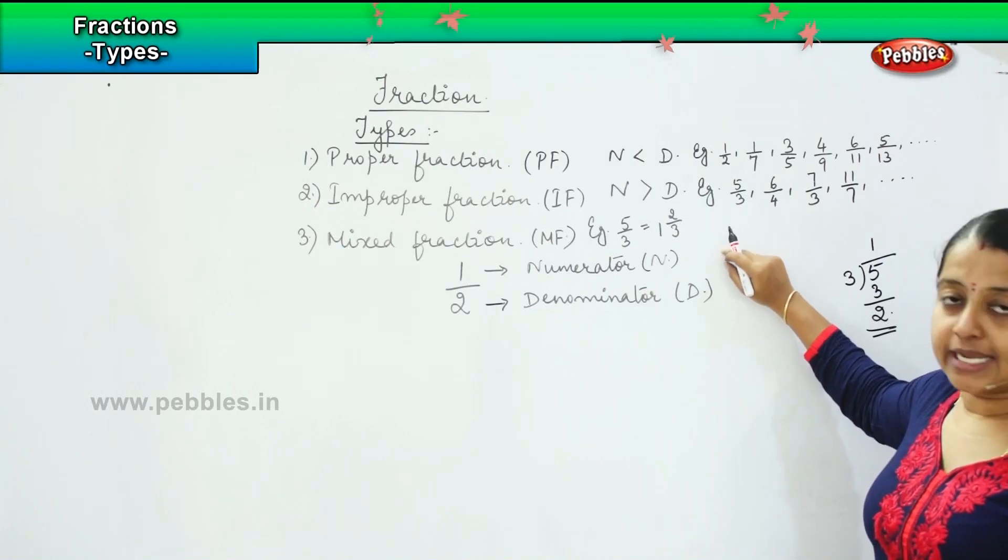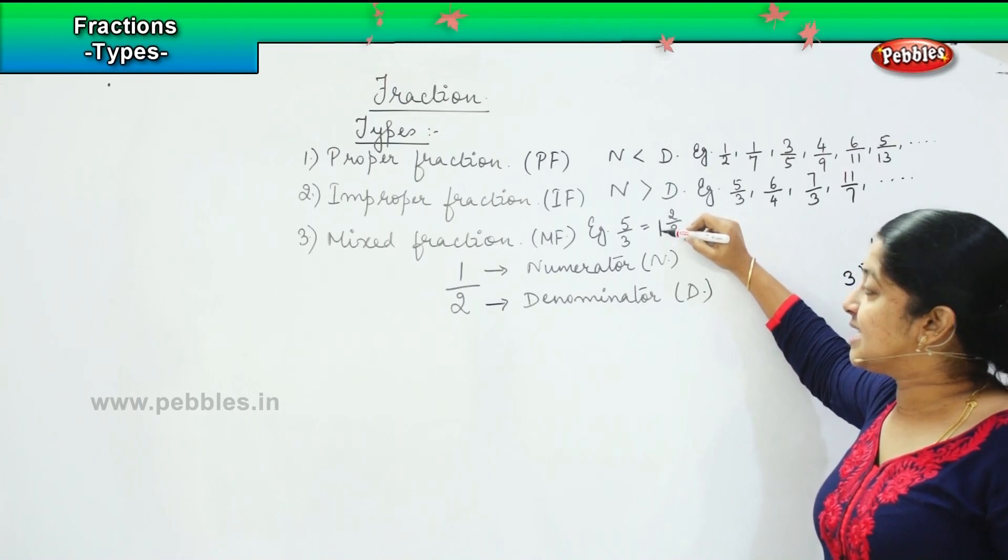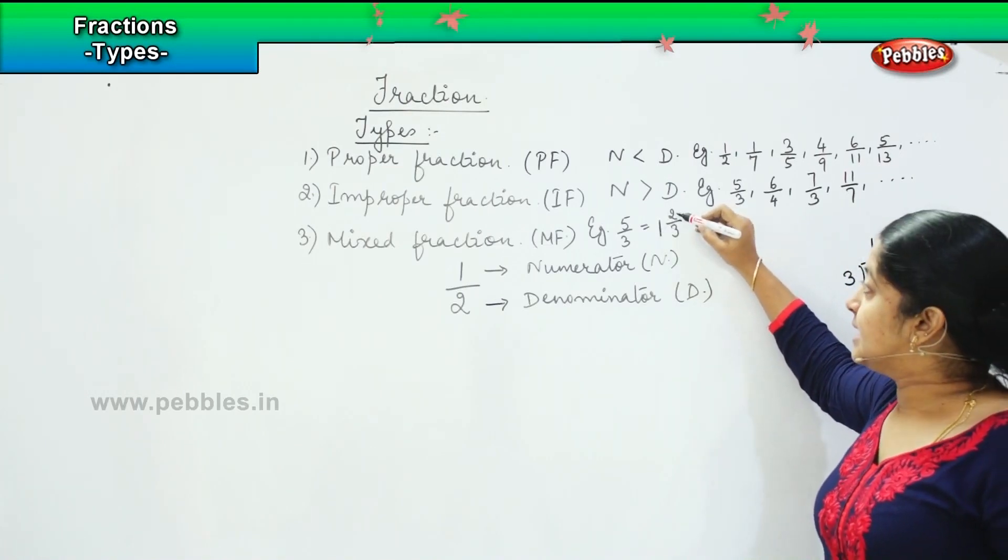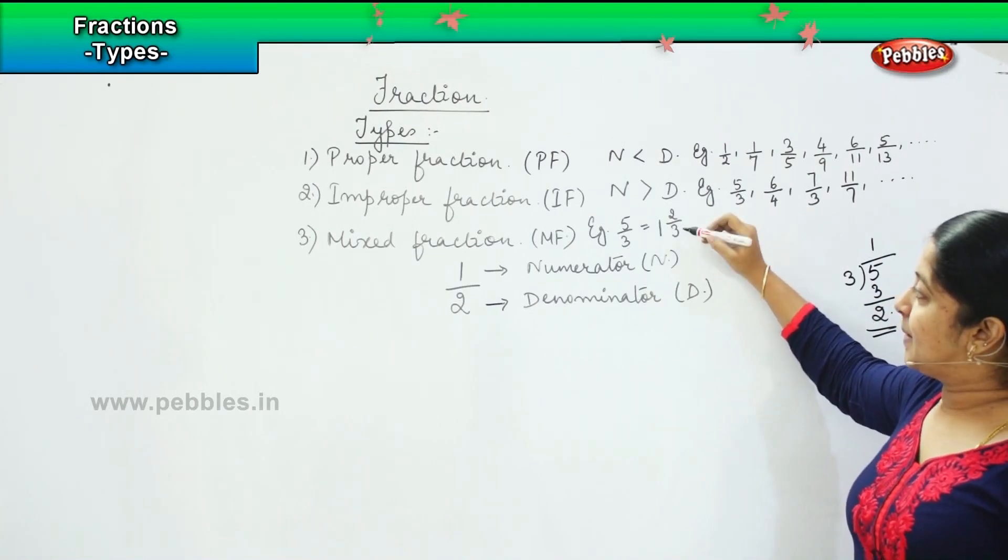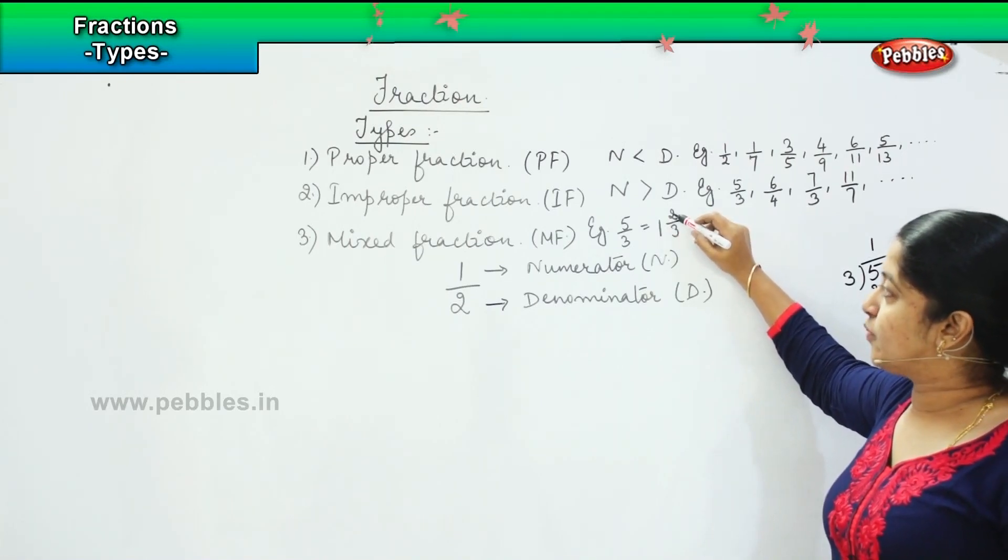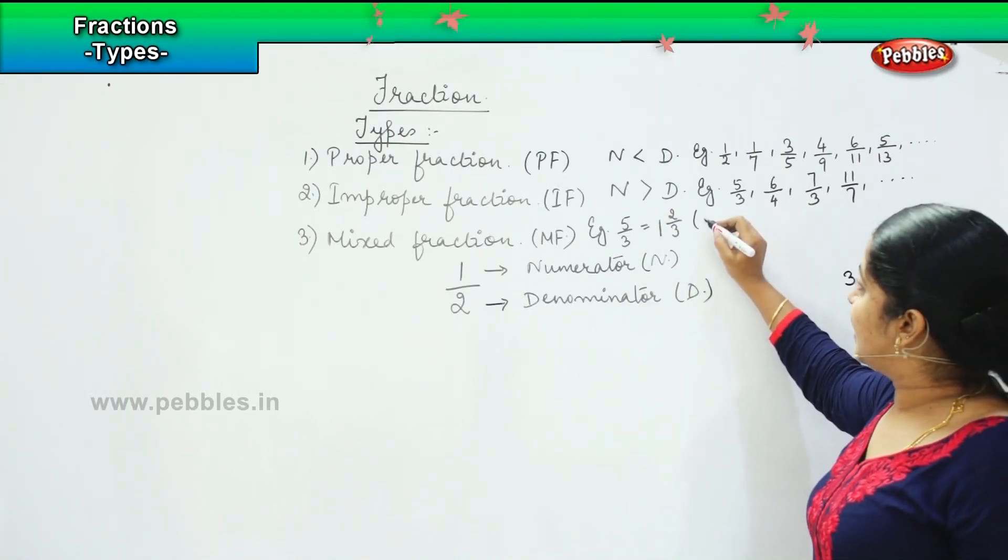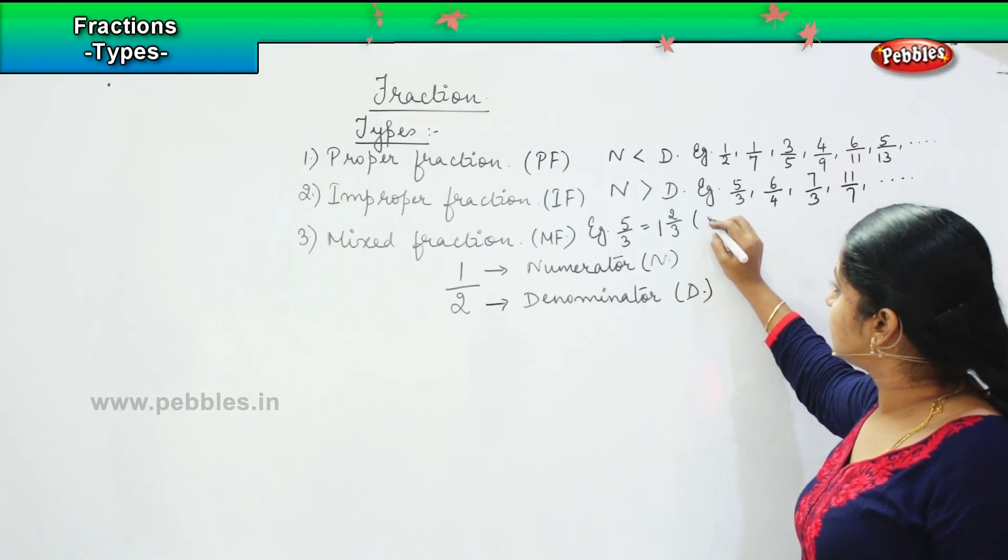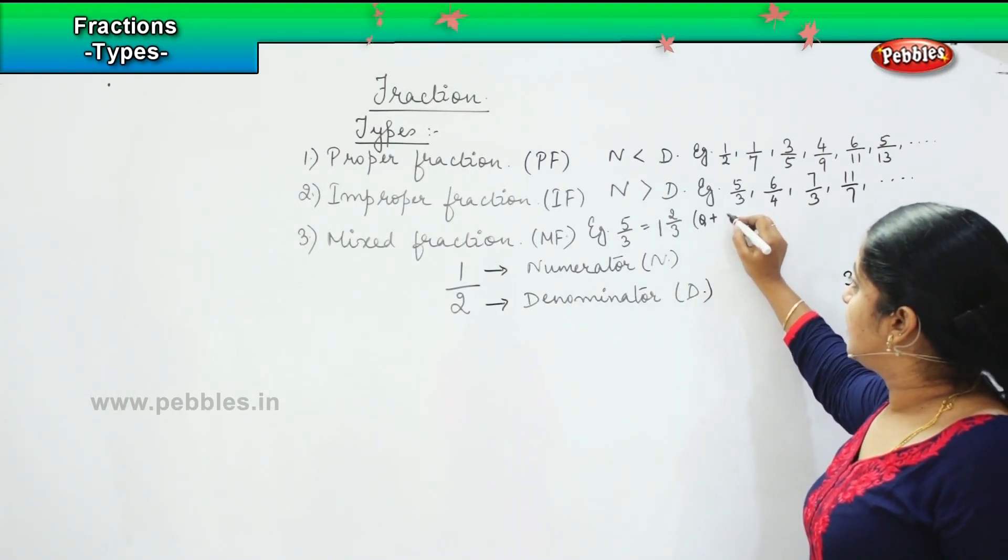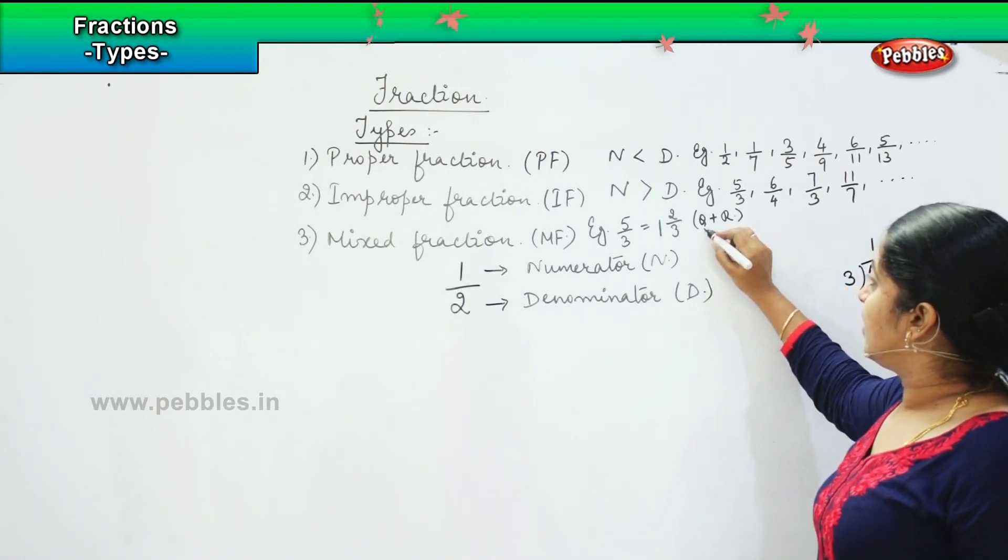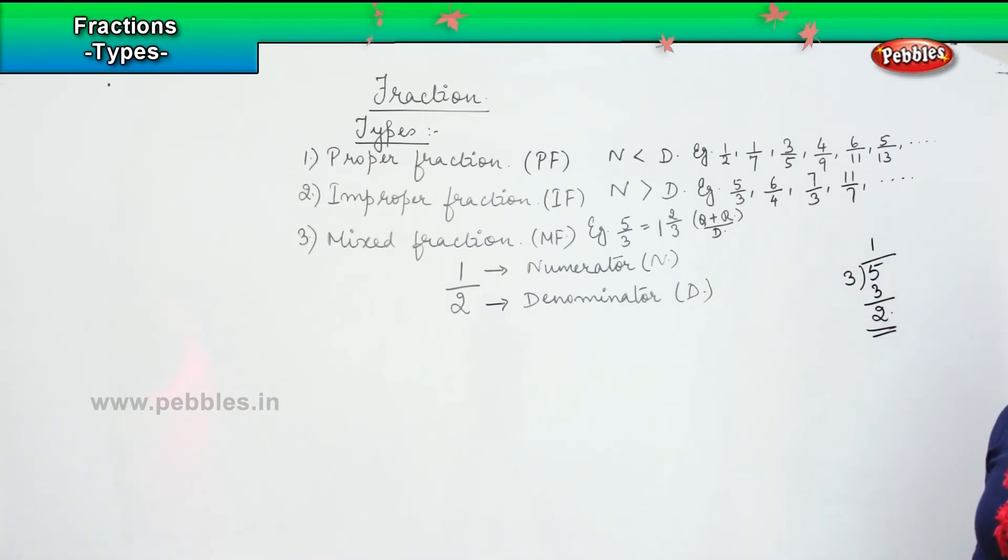Mixed fraction is written in such a way that the number which comes here is your quotient value, this is the remainder value, and this is the denominator. So if you multiply 3 into 1, 3, 3 plus 2, 5, so it becomes 5 by 3. So here it is the combination of your quotient plus the remainder divided by denominator.